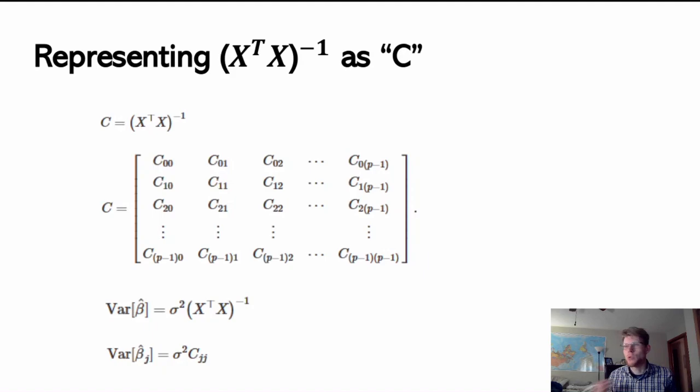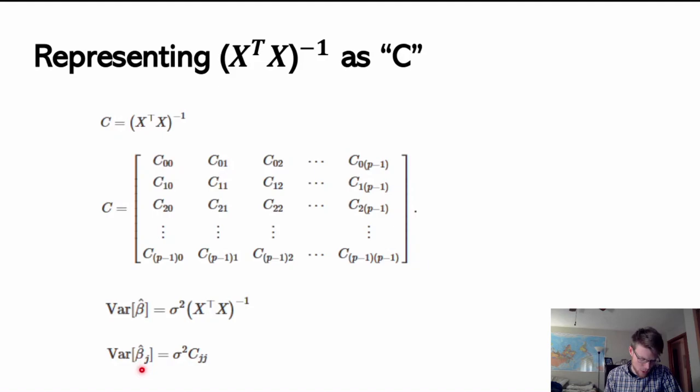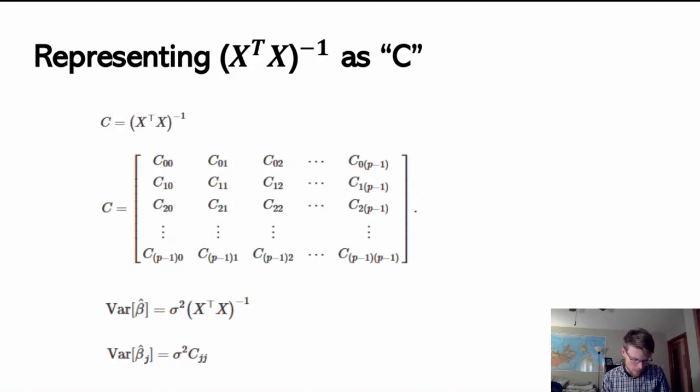So if we're looking at beta hat naught, we're looking for C00 — the entry in the first position. If we're looking for the variance of beta hat 2, we're looking for the entry in the third row, third column, labeled C22. We start at 0, so 0 is in the first row, 1 is in the second row and column, et cetera. This is done so that the subscript matches the number of the predictor.